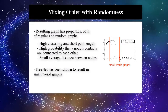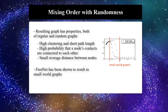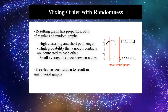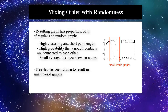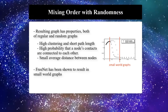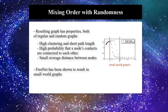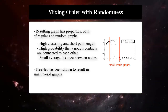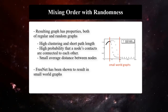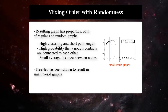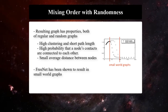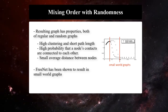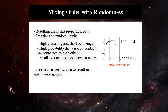The resulting graph has properties of both regular and random graphs. It has large clustering coefficients and a small average shortest path length. There is a high probability that a node's contacts or neighbors in such a graph are connected to each other. Can we say every scale-free network is a small world? How about the converse?